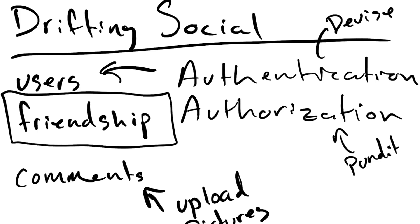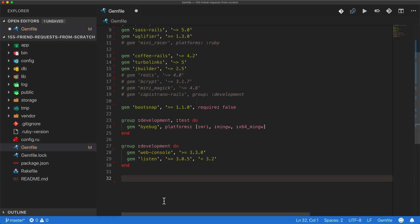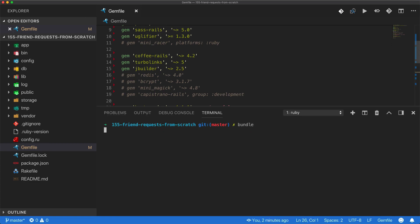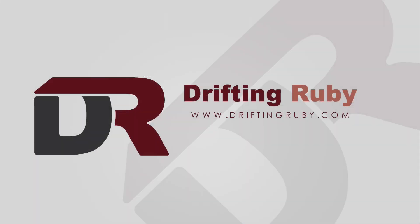In this episode, we first want to create our Devise setup, and then we also want to create our friendship models. The first thing we'll do is add the Devise gem to our Gemfile, and then within our terminal we'll run bundle.